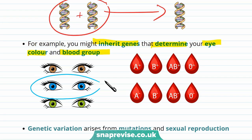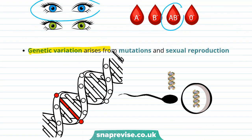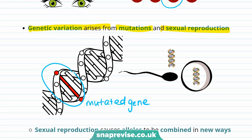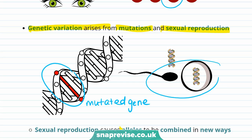For example, you might inherit blue eyes from your parents, or the blood type AB negative. Genetic variation arises from mutations and sexual reproduction. Mutations occur when DNA is replicated incorrectly, causing changes to the protein encoded by the gene. Sexual reproduction involves a fusion of DNA from the sperm and the egg, making a new, unique genome and causing alleles to be combined in new ways.